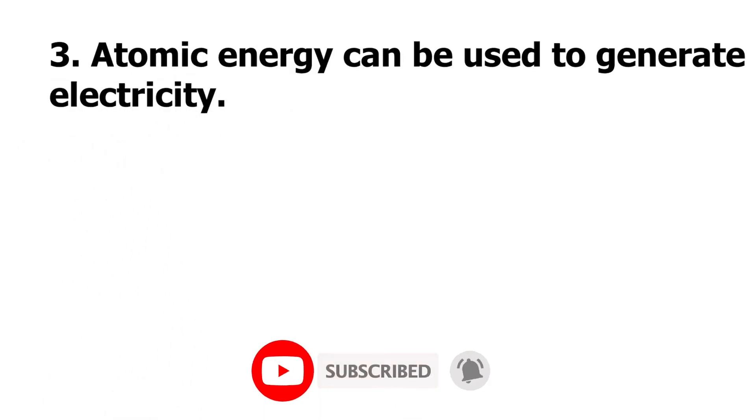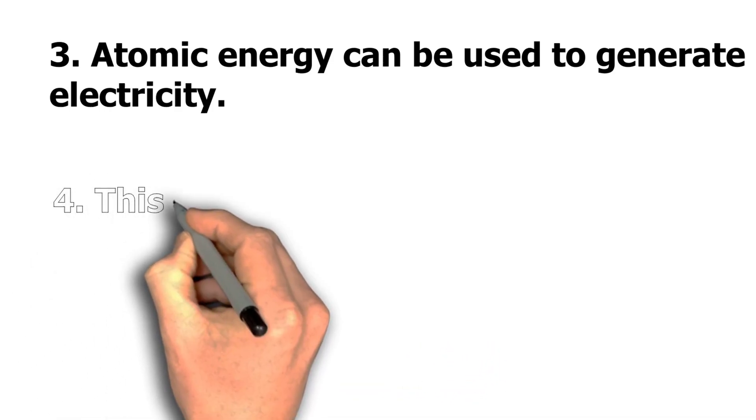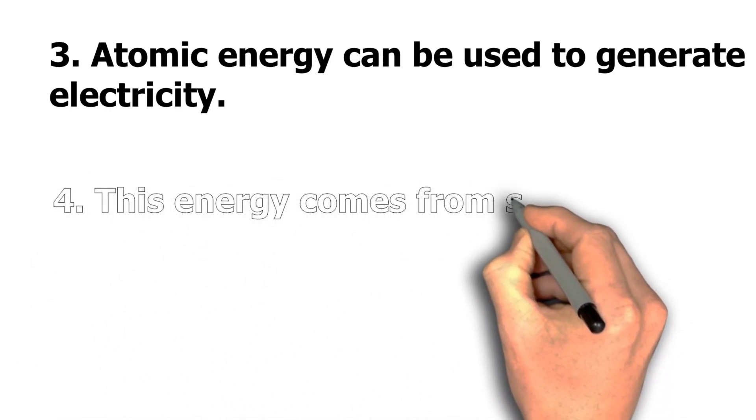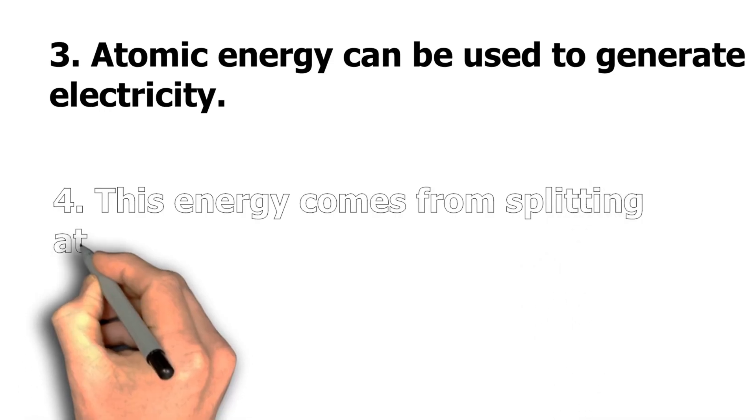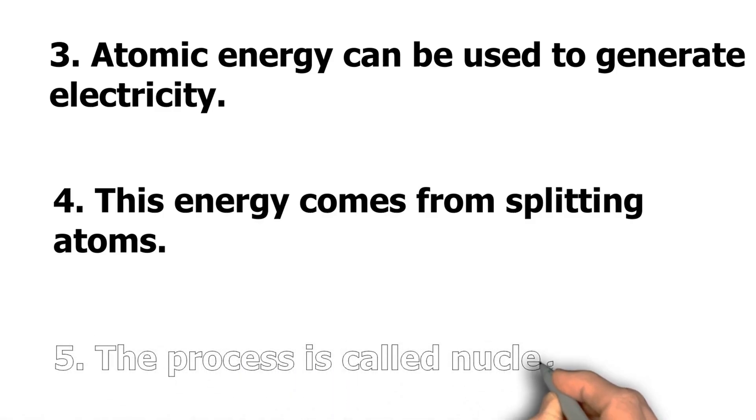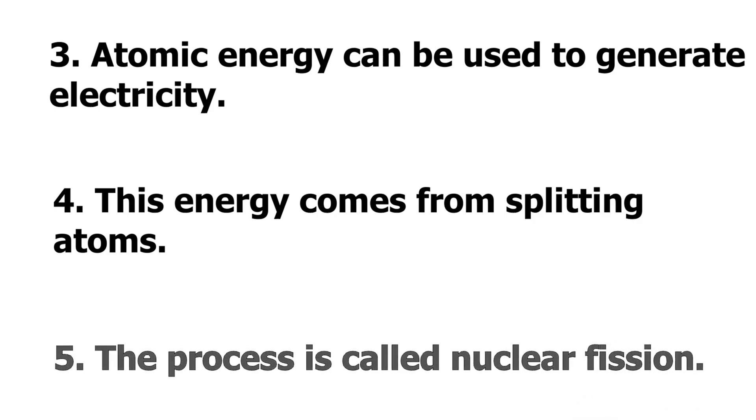Number 3: Atomic energy can be used to generate electricity. Number 4: This energy comes from splitting atoms. Number 5: The process is called nuclear fusion.